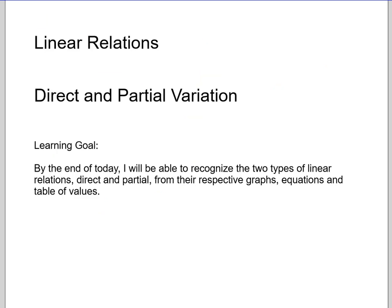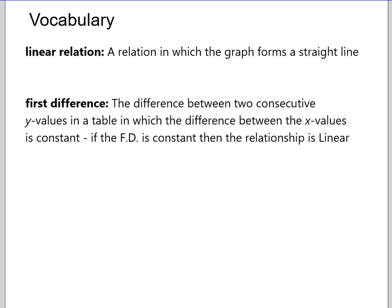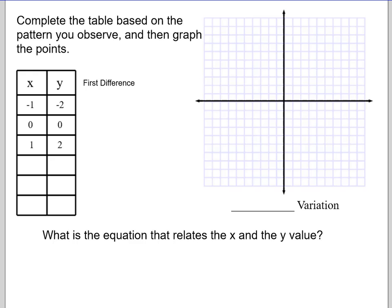Okay, so today we're looking at direct and partial variation. These words showed up in yesterday's lesson. We're going to define them a little bit more. So by the end of today, I'll be able to recognize the two types of linear relations. There's only two, so that's good news. Direct and partial. From their respective graphs, equations, and tables of values. This is vocabulary. Pause it here if you haven't seen it. Make sure you add it to your list, but you can read it.